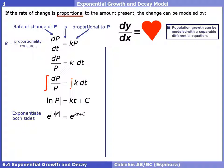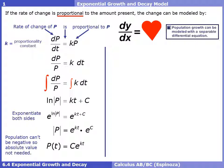We need to exponentiate both sides. If you recall from 6.1, if you have a natural log trapping p, we need to solve for p before we find c. Exponentiating both sides leaves us with the absolute value of p on the left side. On the right side, we can separate the power into two factors: e to the kt times e to the c. We can call e to the c just another constant c, since e raised to a constant is just another constant. We can drop the absolute value because populations can't be negative, and write it as p of t.